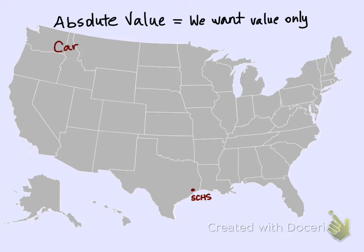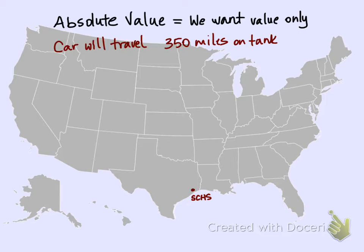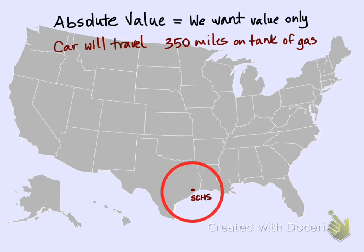So you know that your car will travel 350 miles on a tank of gas. Your car doesn't really care what direction you go — it only cares how far you went. So with a tank of gas, you could drive 350 miles in any direction. Let's draw a circle. This is our circle with a certain radius, and our radius is 350 miles. You could drive whichever direction you want. If you go further than this circle in any direction, you're going to run out of gas and you'll need to put more gas in your car.